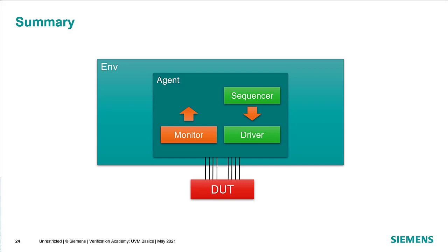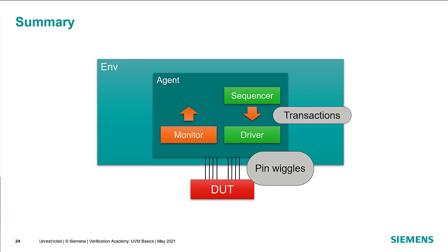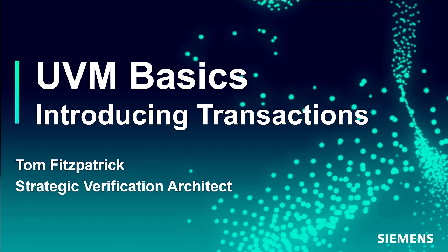To summarize: in our agent, we have a sequencer and a driver. The driver talks through pin wiggles to the DUT, and the sequencer allows sequences to generate transactions and communicate them to the driver. We have transaction-level communication from sequencer to driver, and the driver turns that into pin-level communication to the DUT. That's it for this session of the UVM Basics class — please stick around for the next session.